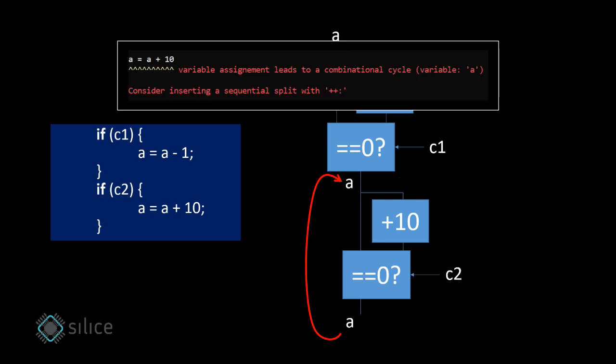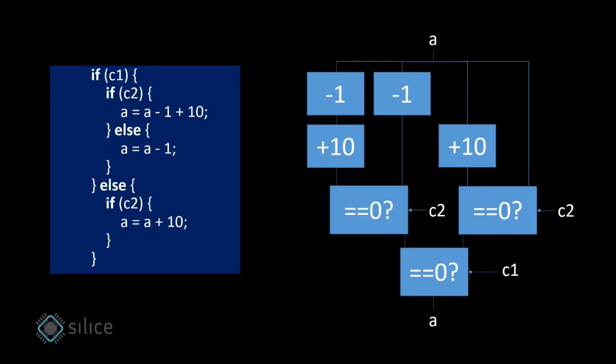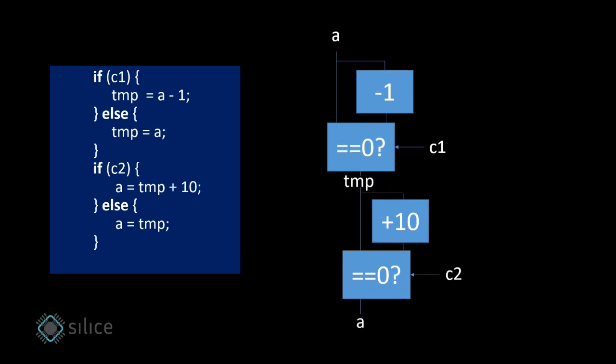How can we fix that? The first approach is to split in two cycles as suggested by the error message. We could also rewrite the code in nested if-else conditions, but that results in a more complex circuit. The third way is to introduce a temporary variable, TMP. Which one is better? Well, that again depends, which is why Silice lets you in charge.